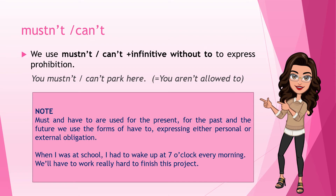Note: 'must' and 'have to' are used for the present. For the past and the future, we use forms of 'have to' to express either personal or external obligation. For example: 'When I was at school, I had to wake up at seven o'clock every morning,' or 'We'll have to work really hard to finish this project.'